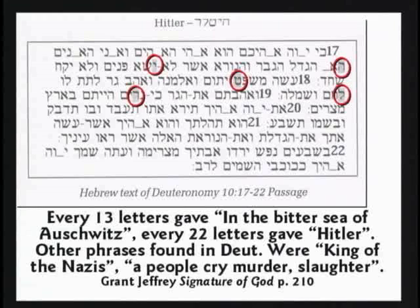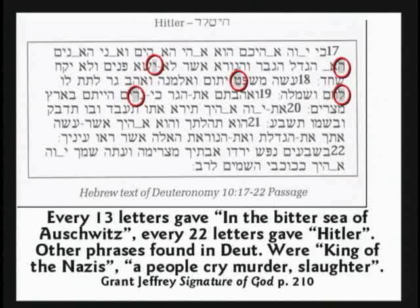They just randomly began looking for names, like Hitler in Hebrew. They found the first letter, counted over until they found the second letter of his name — let's say it's 13 spaces — so they told the computer to find every 13th letter, and it found Hitler. Then in that same passage they found other things related to Hitler: the Hebrew words for 'a people cry murder,' 'slaughter,' 'king of the Nazis,' and Auschwitz found every 22 letters. There seem to be very interesting hidden codes in the Bible.